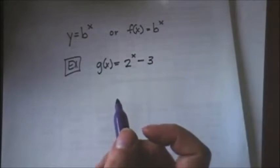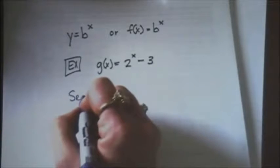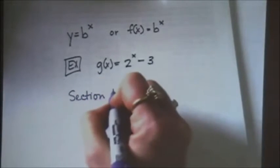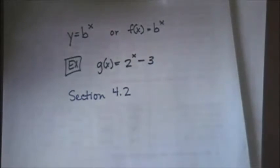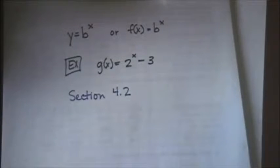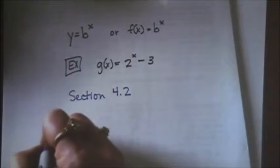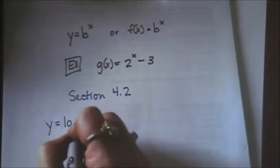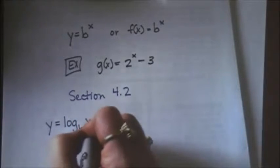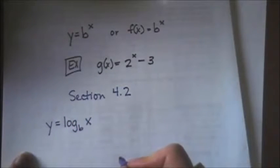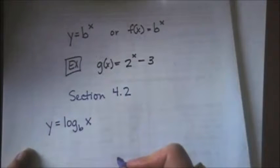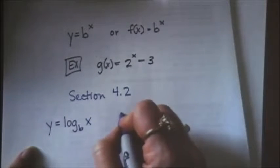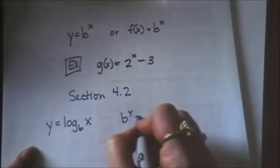But one of the important things that you need to know for section 4.2 is how to rewrite a logarithm as an exponential and vice versa. So change them back and forth because they are inverses. So you will have something written in logarithmic form which would be y equals log base b of x and they'll ask you to rewrite that as an exponential and that would be b to the y power equals x.